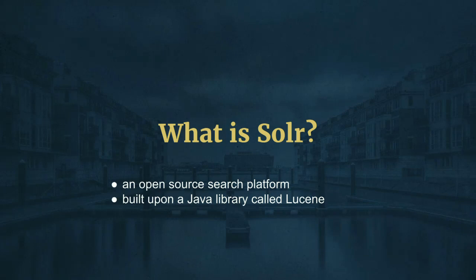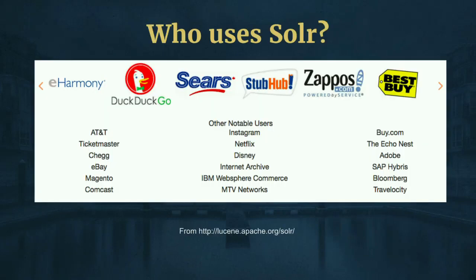I won't go deep into what Solr is. Most of you are already familiar with it — it's an open source search platform built on Java, called Lucene. As you can see from a screenshot from the Apache.org website, big names like Netflix and Disney are using Solr on their search.